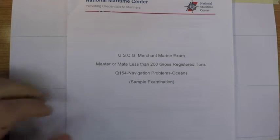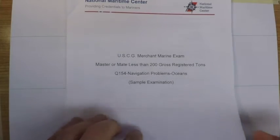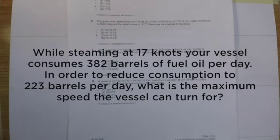Welcome back to the video series solving the 200-ton oceans navigation problems sample exam. We are now on question number seven, which reads: while steaming at 17 knots your vessel consumes 382 barrels of fuel per day. In order to reduce consumption to 223 barrels, what is the maximum speed the vessel can turn for?